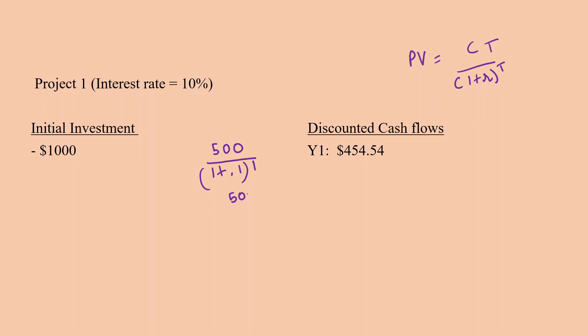Similarly for year two, it's going to be 500 divided by 1.1 raised to the power 2, since it's period 2, and that turns out to be equal to $413.22.